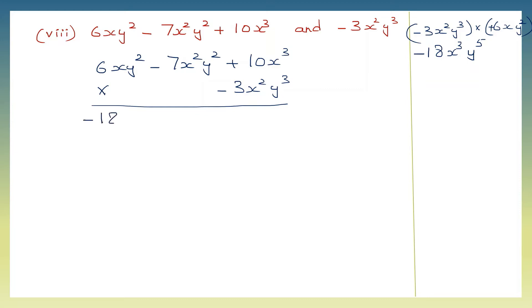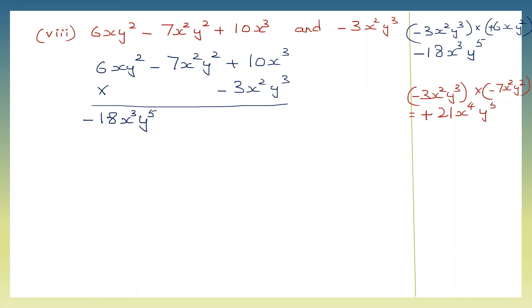Now let's take minus 3x squared y cubed into minus 7x squared y squared. First the signs: minus into minus is plus. 3 sevens are 21. x squared into x squared is x to the power of 4 — simply add the powers. y to the power of 3 into y to the power of 2 will be y to the power of 5. So I've got plus 21x to the power of 4 and y to the power of 5.